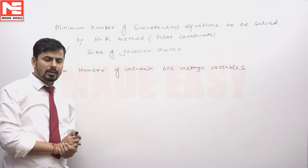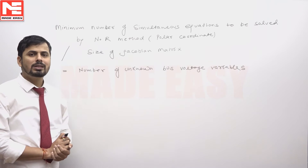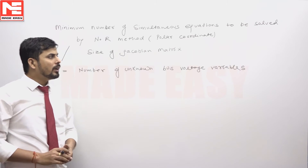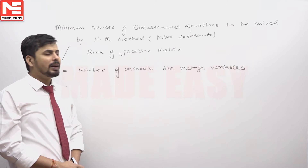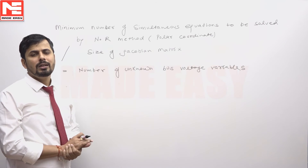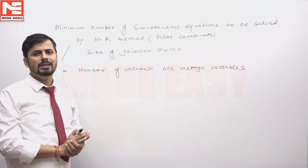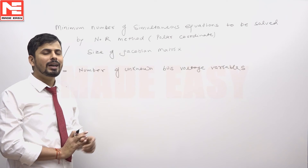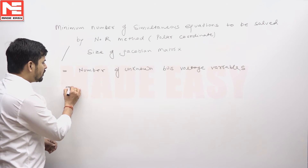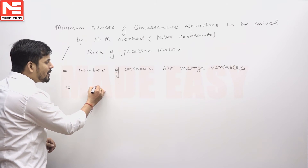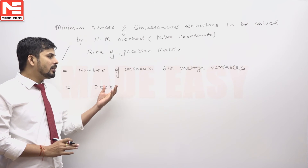In this problem, the system has 200 buses, among which 160 buses are PQ buses. To find the number of unknown bus voltage variables, we note that at any bus there are two voltage variables: one is the magnitude of voltage and the other is the phase of voltage. So for 200 buses, the total number of voltage variables will be 200 × 2 = 400.